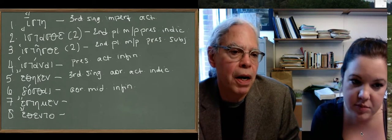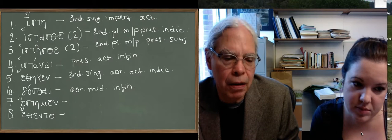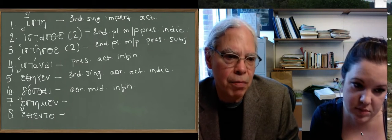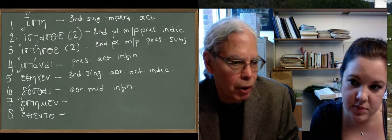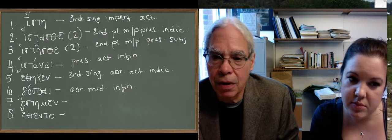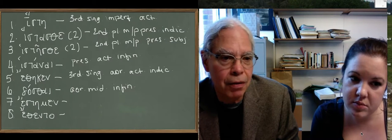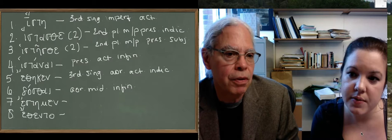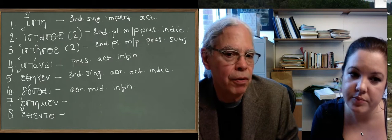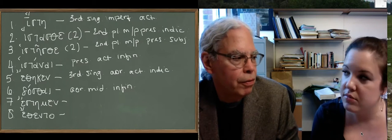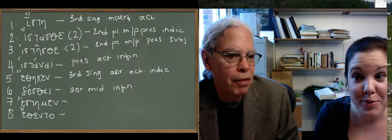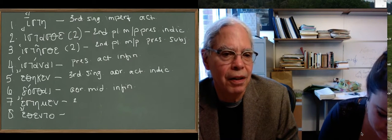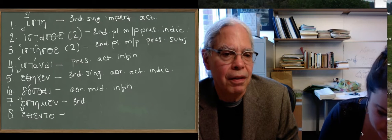The next form is e, stay, men. We've got an augment e, a stem stay, and a personal ending men. Notice, we've got stay, not reduplicated, so it has to be aorist. We've got the aorist, so it's an augment, we know that it's an indicative form, and men is the first person plural ending. So what have we got? Aorist, first person plural, active. Indicative.